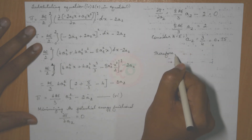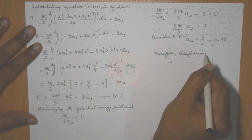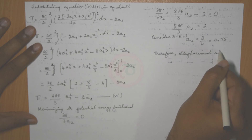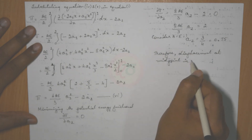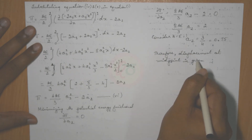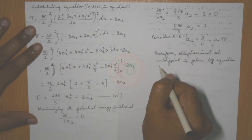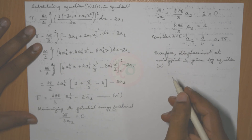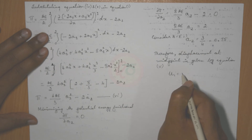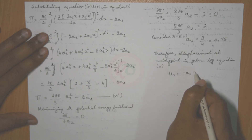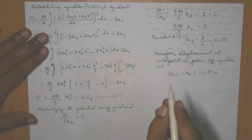Therefore, displacement at the midpoint is given by equation 5: u1 equals minus a2, which equals minus 0.75 meters. So 0.75 meters is the displacement at the midpoint.